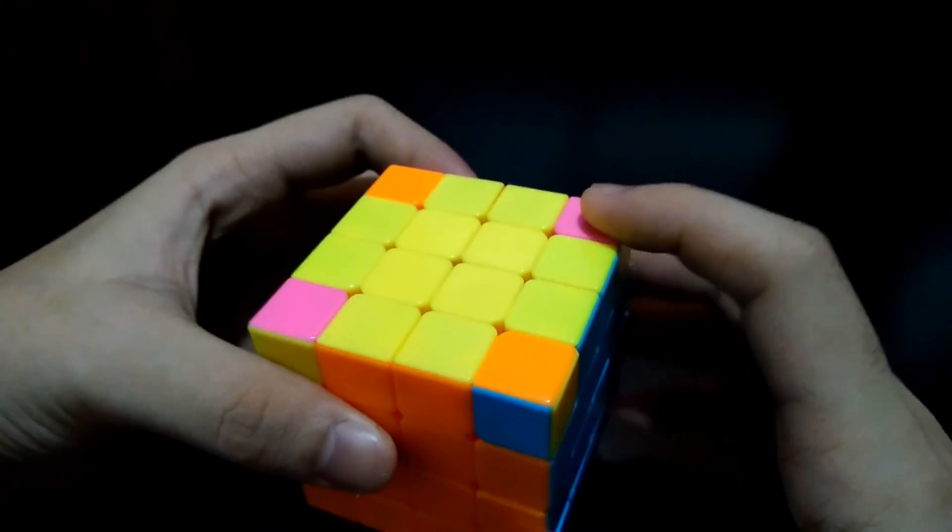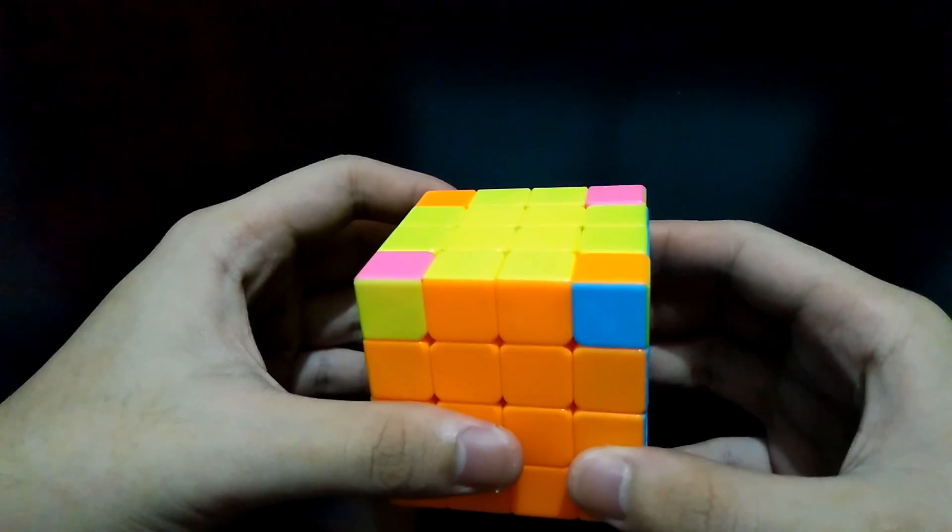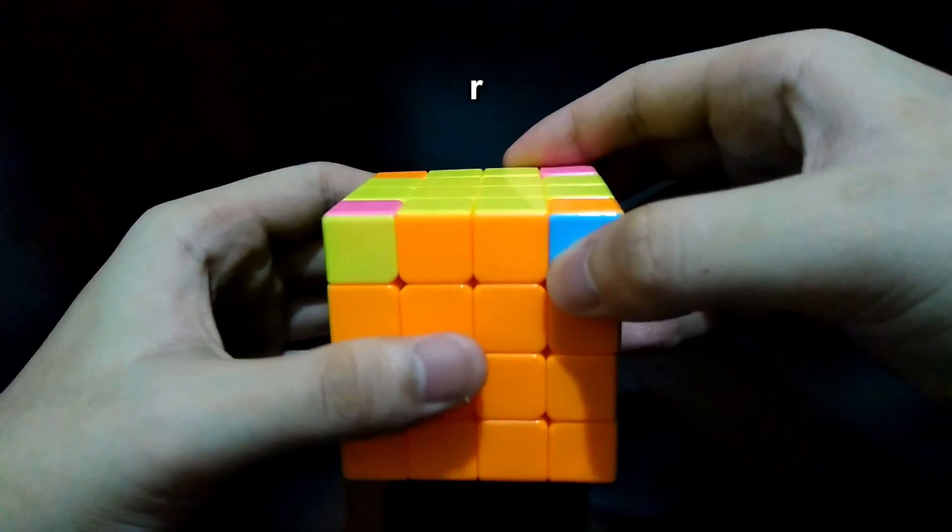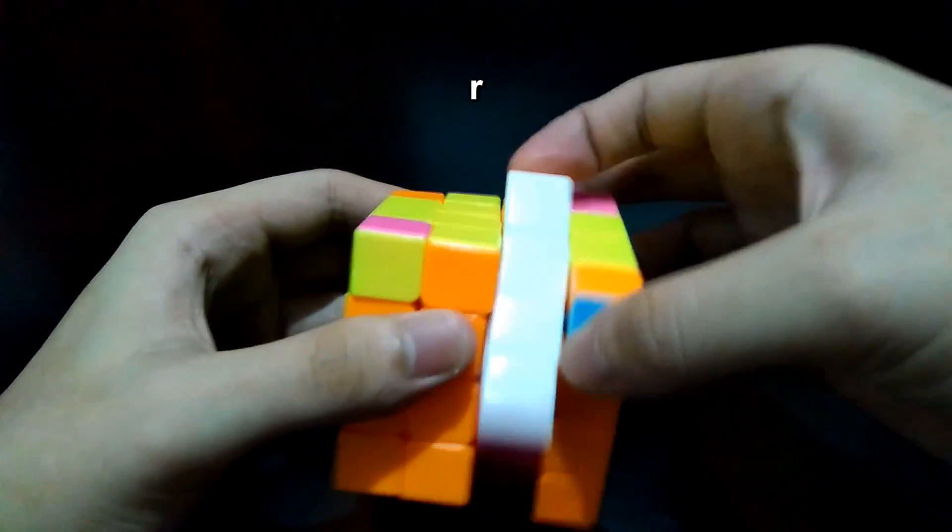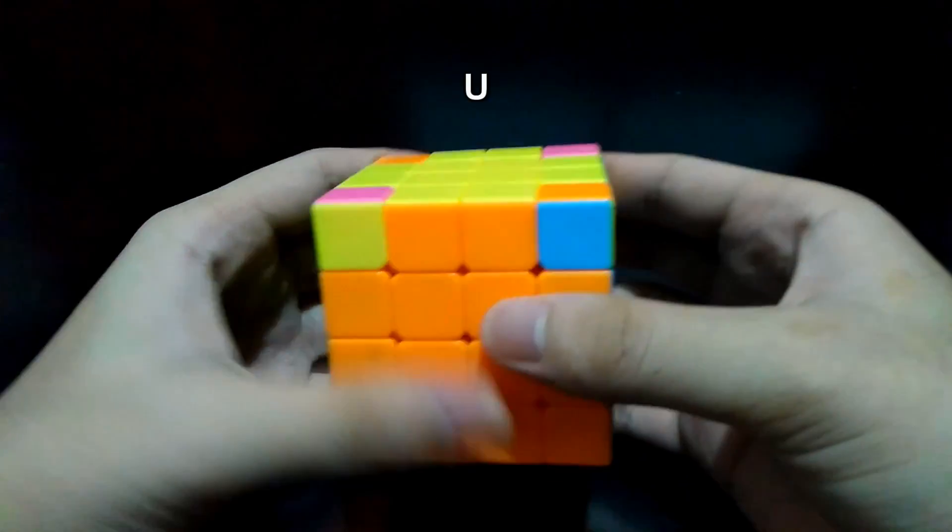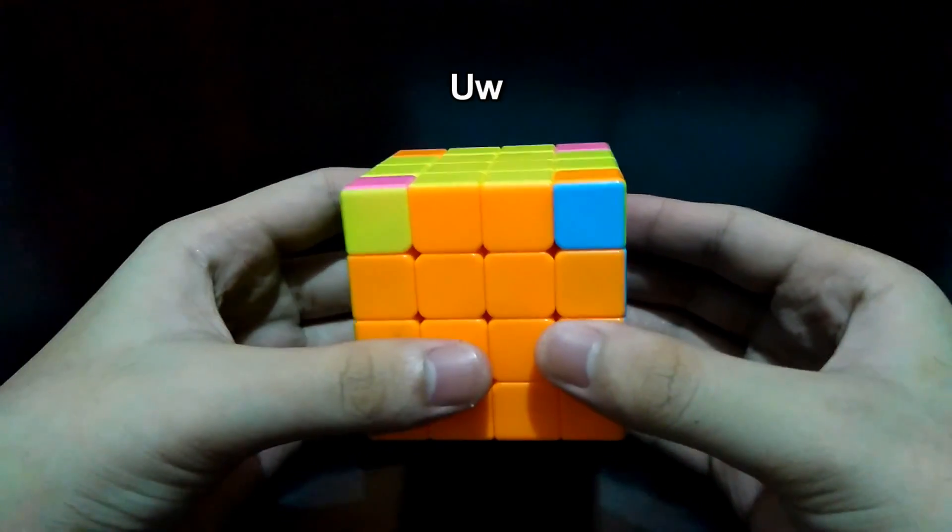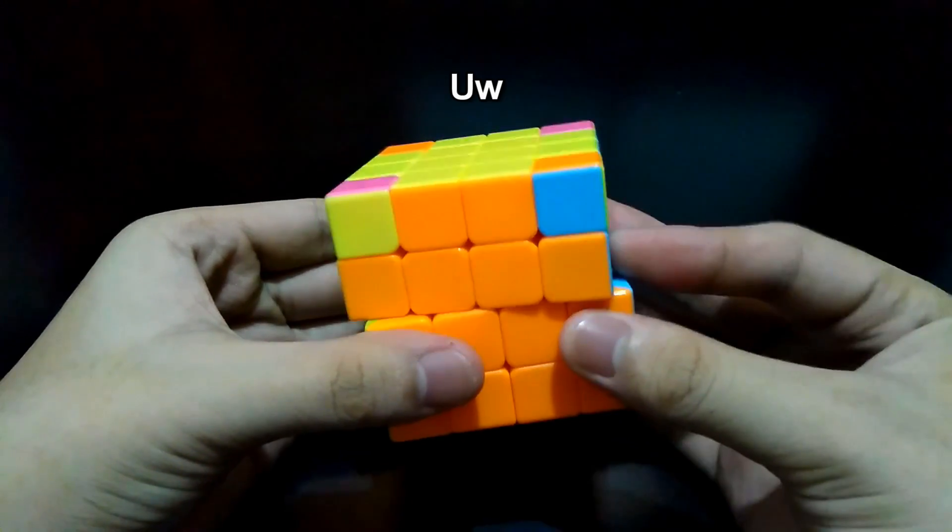The algorithm is very easy. You may face any side. For the purpose of the algorithm, the small letter R pertains to this side, U pertains to this side, and UW pertains to these two layers.